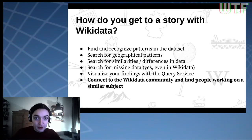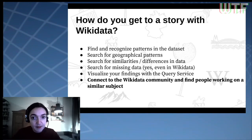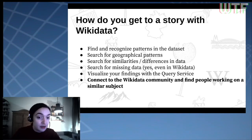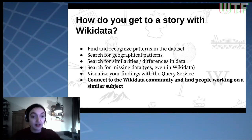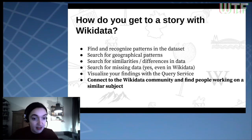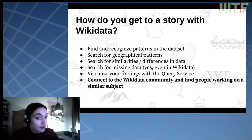So how do you get to a story with Wikidata? You want to find and recognize patterns in a data set. You can search for geographical data, for similarities and differences in the data, and also for missing data because that also exists in Wikidata. You can visualize your findings with the tools in the Wikidata query service, and most importantly, you can connect to the Wikidata community and find people working on a similar subject or research question.